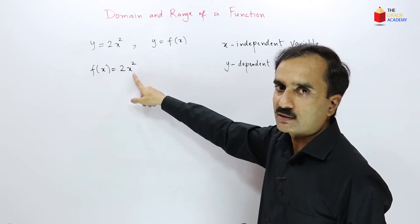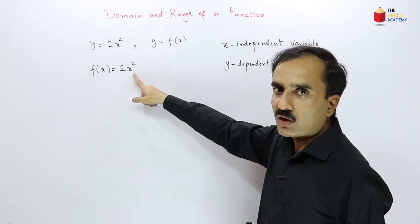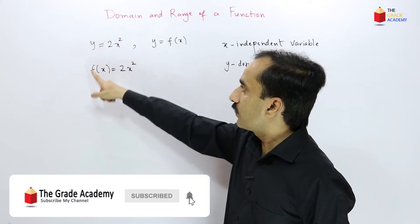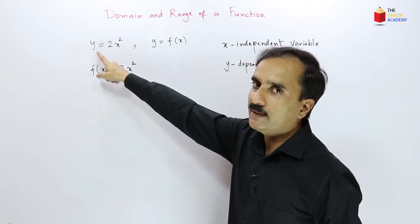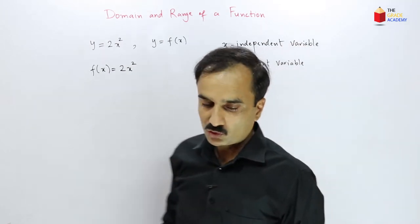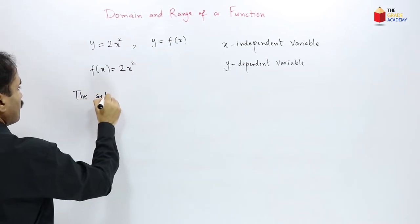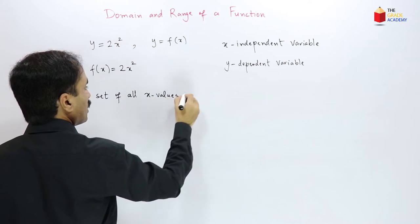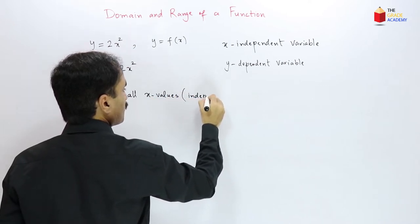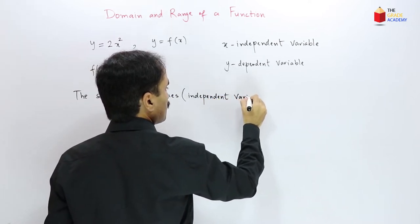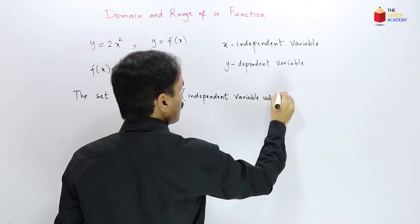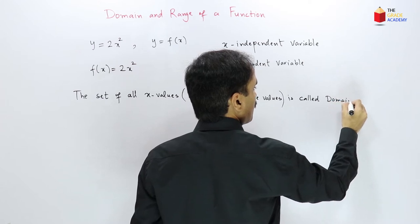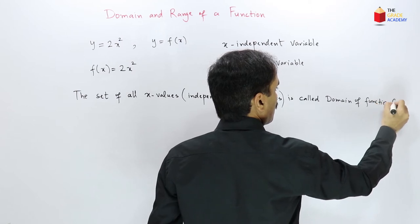All the values we can put inside the function — that is called the domain of the function. The domain is the set of all x values that we can put inside the function. The set of all independent variable values is called the domain of function f.